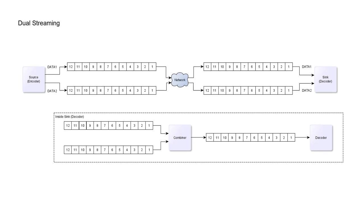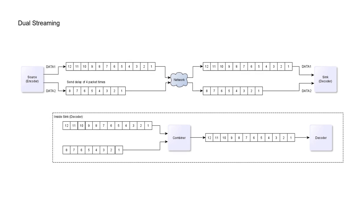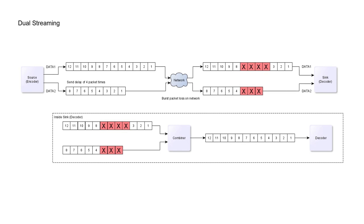It is also possible to use dual streaming on a single transmission network, but in that case it is recommended to delay one stream by a fixed amount of time to cope with burst error losses that would affect both streams simultaneously. In this example, since stream 2 is sent with a time delay relative to stream 1, not the same packets are lost on both streams, making it possible to recombine the original stream without any gaps.